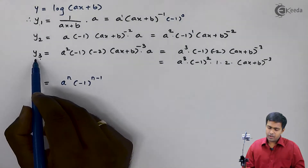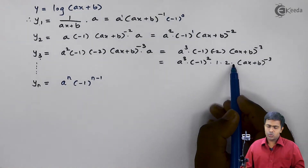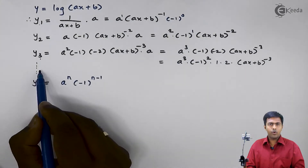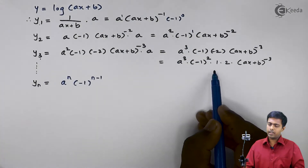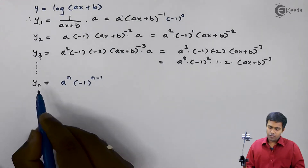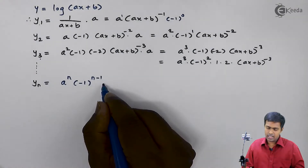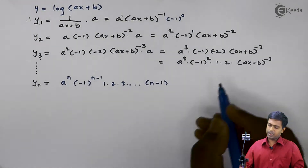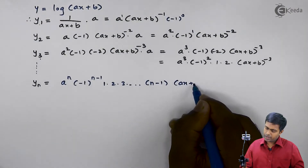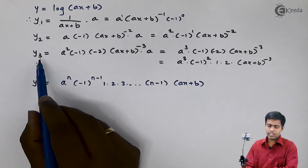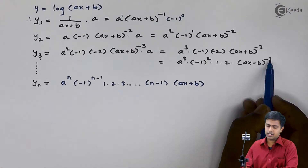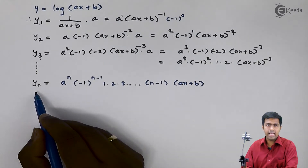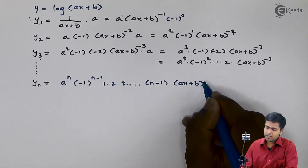Next, in y2 we just got 1; in y3 we got 1 into 2. So when I find y4, this series becomes 1 into 2 into 3. So for yn, this series will be 1 into 2 into 3 up to (n minus 1). And the last term is (ax plus b). Observing the power: in y3 the power was minus 3, in y2 the power was minus 2 — so similarly in yn we will get power as minus n.